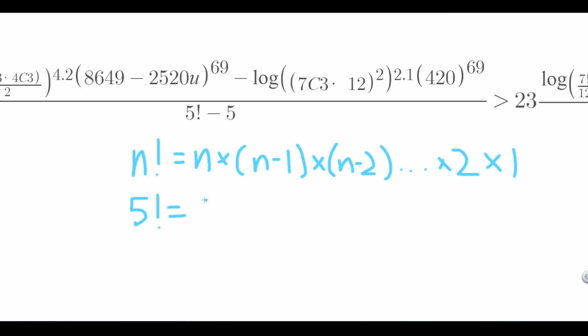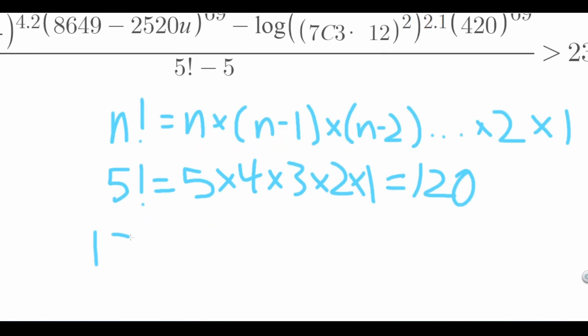That means that the number is multiplied by all the integers below it until it reaches one. This means that five factorial is five times four times three times two times one which is 120. Then we subtract five from it and that gives us 115.